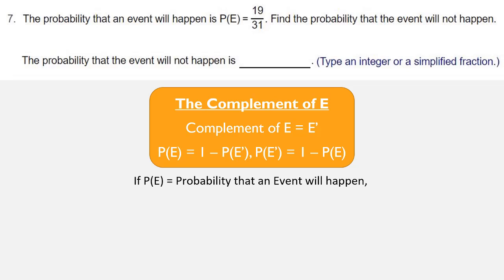So, if the probability of E is the probability that an event will happen, then the probability of E prime is the probability that the event will not happen.